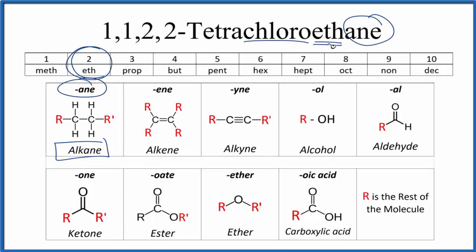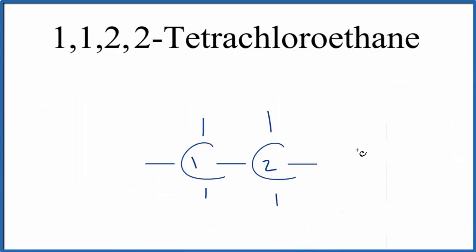Let's write those two carbons and number them. So right now we have ethane, two carbons. They're bonded together, and then these lines here, those are all hydrogens.